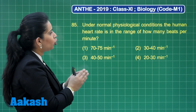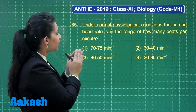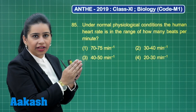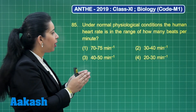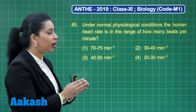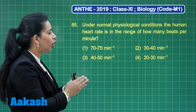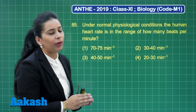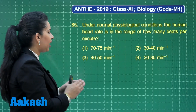Coming back to the beats per minute: option 1 is 70 to 75 per minute, option 2 is 30 to 40 per minute, option 3 is 40 to 50 per minute, and option 4 is 20 to 30 per minute.